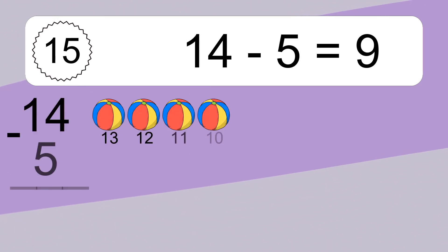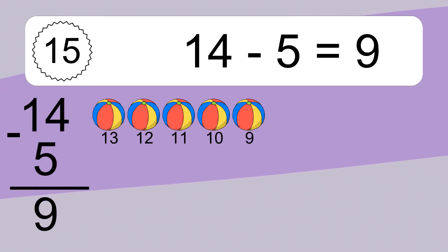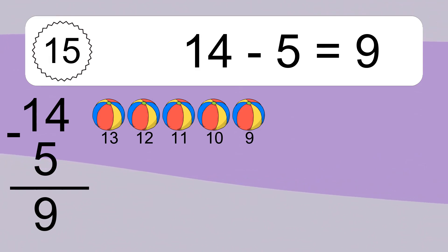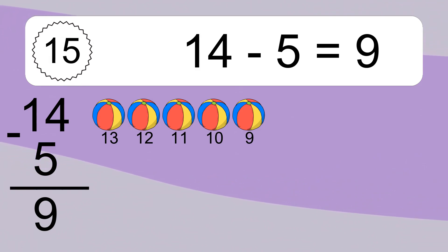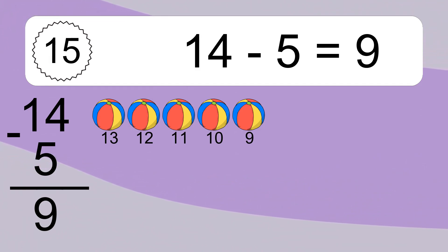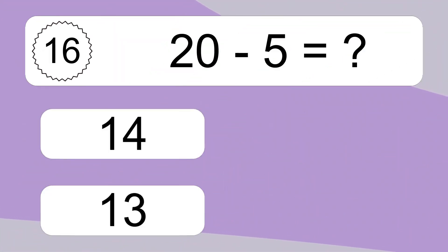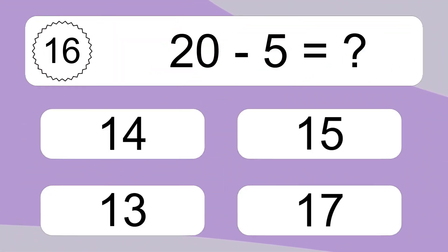14 minus 5 equals what? 14 minus 5 equals 9. Let's count it: 13, 12, 11, 10, 9.